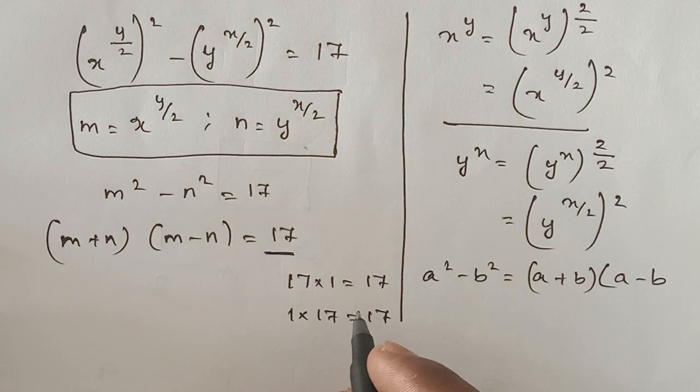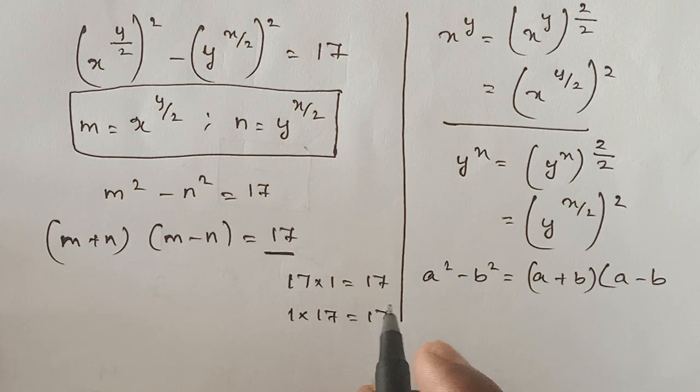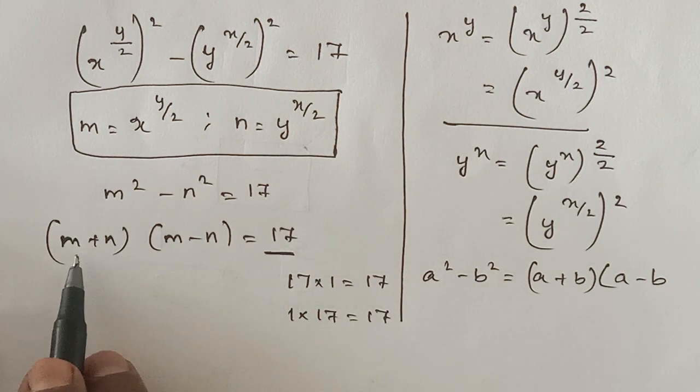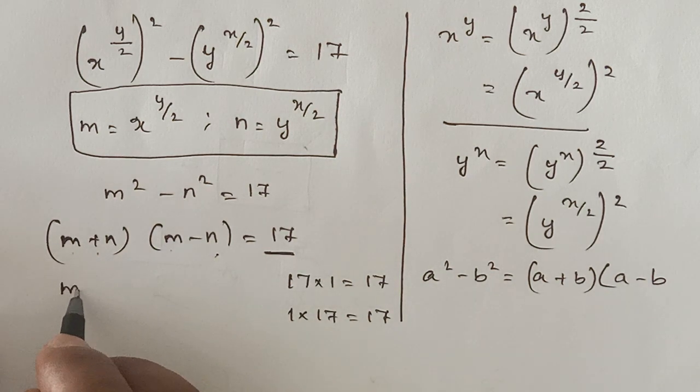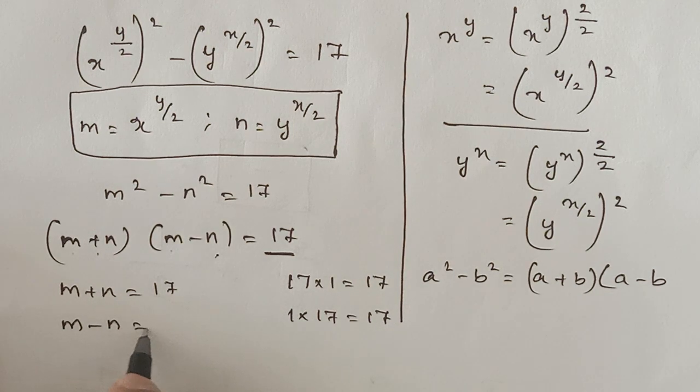And we cannot express it in any other way because it is an integer. So definitely m+n will be more than m-n. So we can say m+n is equal to 17 and definitely m-n must be 1.